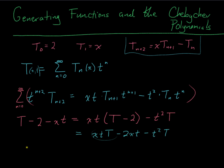If I move these two guys to the other side, and move those two to this side, I've got altogether T minus xtT and then plus t²T.